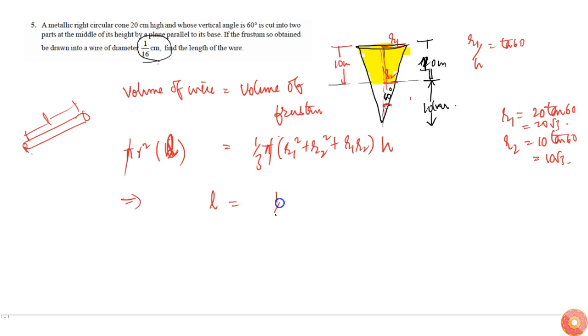That implies π cancels, and now length l is equal to 1/3 times (r1² + r2² + r1·r2) times height h, divided by r².